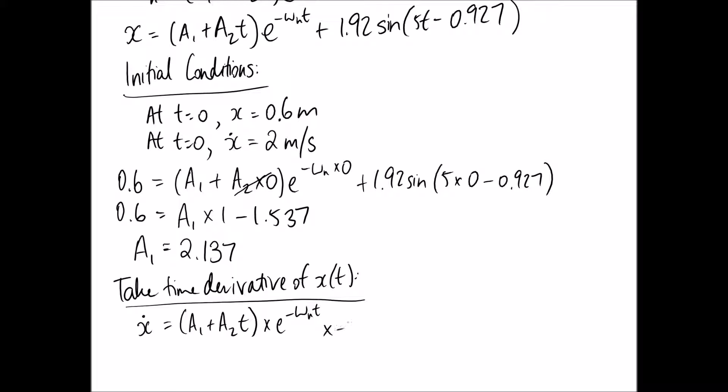So that looks like this. It's e to the power of whatever it is, and then multiply by the derivative of what's inside that exponent part. And then we hold the second part constant and multiply by the derivative of this bracketed part, and that's just going to be A2.